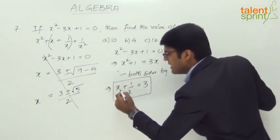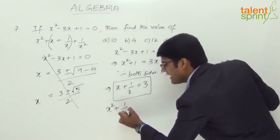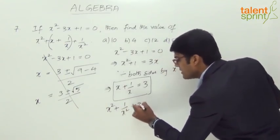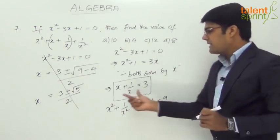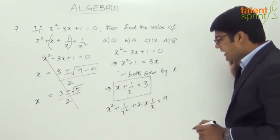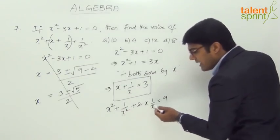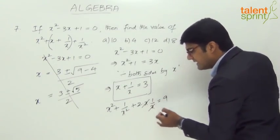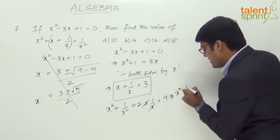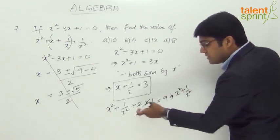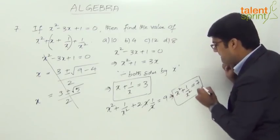Squaring both sides: x plus 1 by x whole squared gives x squared plus 1 by x squared plus 2 into x into 1 by x, equals 3 squared, which is 9. Now 2 into x into 1 by x — the x's cancel — giving 2. So x squared plus 1 by x squared equals 9 minus 2, which is 7.